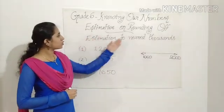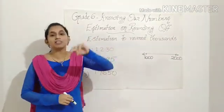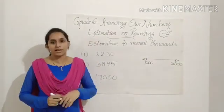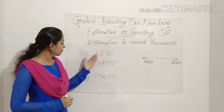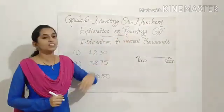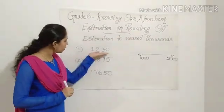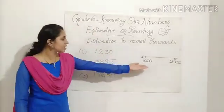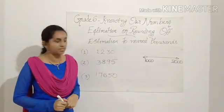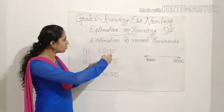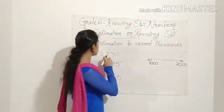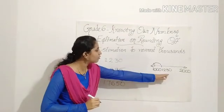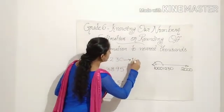The last type is estimation to nearest thousands. Nearest thousands means multiples of thousands — that is 1,000, 2,000, 3,000, 4,000, and so on. The first question is: estimate 1,230 to nearest thousands. You have to check which thousands 1,230 lies between — it lies between 1,000 and 2,000. From the number line, 1,230 lies near to 1,000, so we can estimate 1,230 to 1,000.